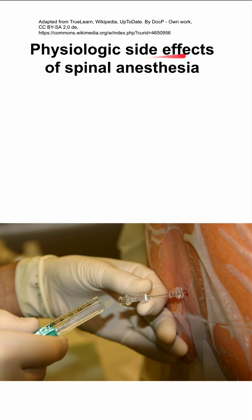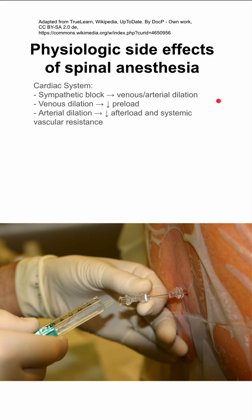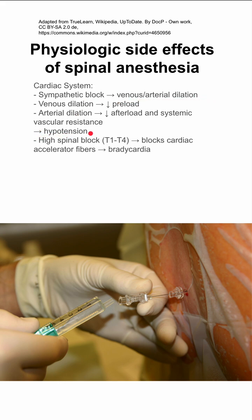These are some of the physiologic side effects of spinal anesthesia, as well as the mechanisms by which they happen. In the cardiac system, you have a sympathetic block, which can lead to venous and arterial dilation. Venous dilation will decrease your preload and arterial dilation will decrease your afterload and your systemic vascular resistance. Both of these can cause hypotension.